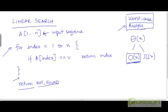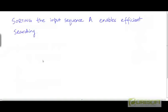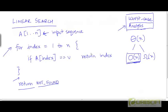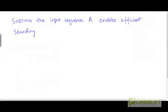Can we do better than linear search? We can, if the input sequence is ordered or sorted. One of the benefits of sorting is that it enables efficient searching. If the sequence were completely unordered, we would have no way to tell a priori where to find v, and we would need to scan every element to be sure v is absent. But if the array is sorted, we can narrow down our search to a particular zone of the array very quickly.